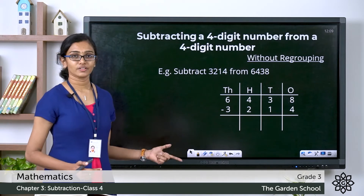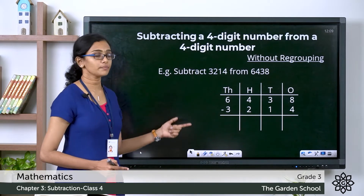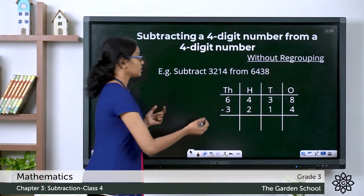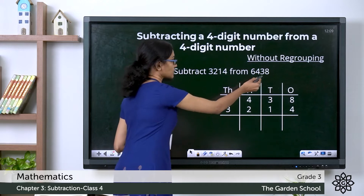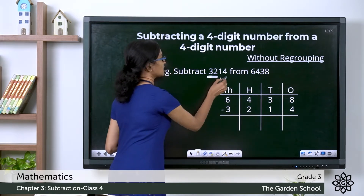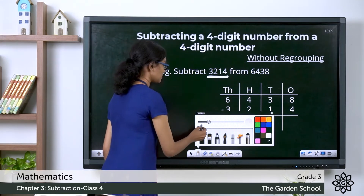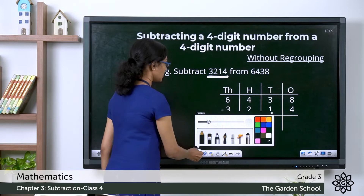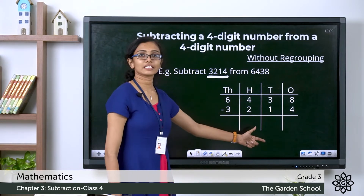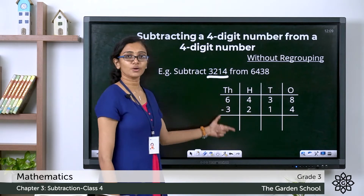Look at this example given here. Subtract 3214 from 6438. So which is the minuend here? 6438 is the minuend and the subtrahend is 3214. Let's do the subtraction now. Where do we start? We start subtracting the ones first, then we subtract the tens, then we subtract the hundreds, and then we subtract the thousands.